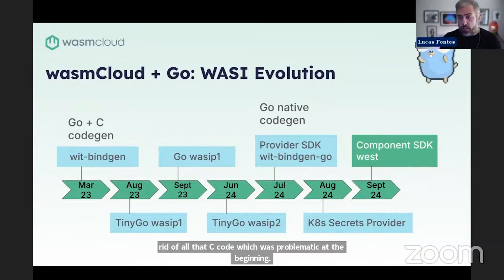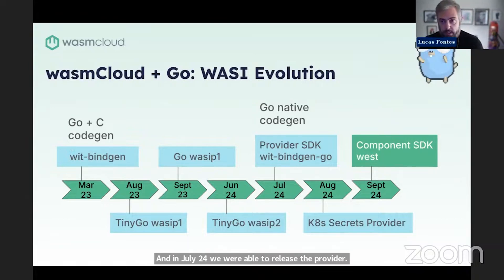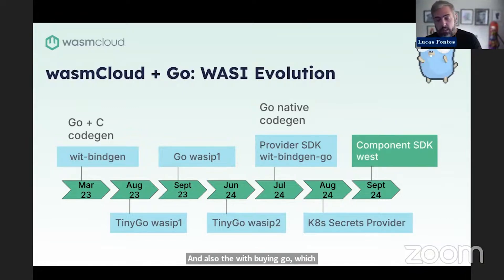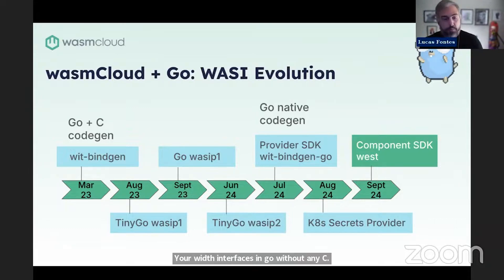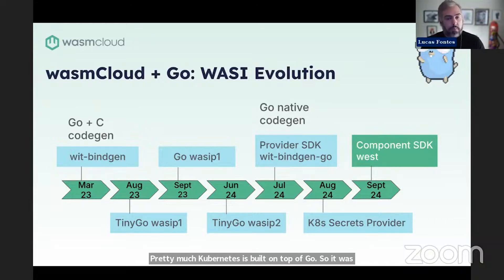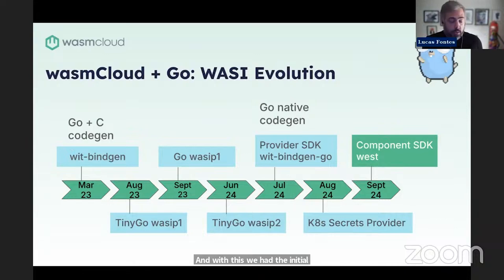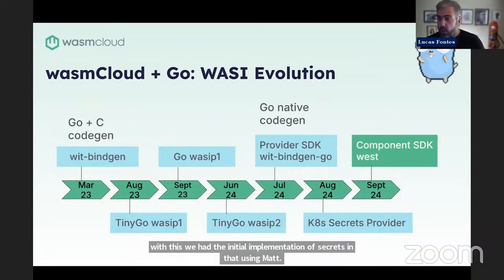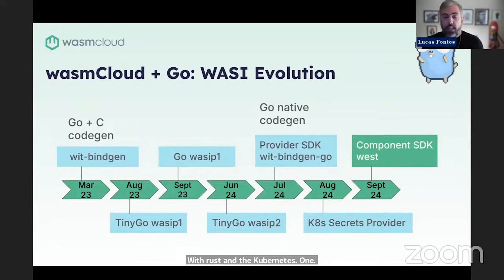In July 2024, we were able to release the provider SDK, which allows you to generate your capability providers in WASM Cloud, and also the WitBindGen, which generates WIT interfaces in Go without any C code. Right after, in August 2024, the Kubernetes secret provider was also implemented in Go. This came with the realization that Go libraries for Kubernetes are extensive — Kubernetes is built on top of Go. So we had the initial implementation of secrets backends in NATS using Rust, and the Kubernetes one in Go. This also proves that we can use any language to create providers, components, and secrets.